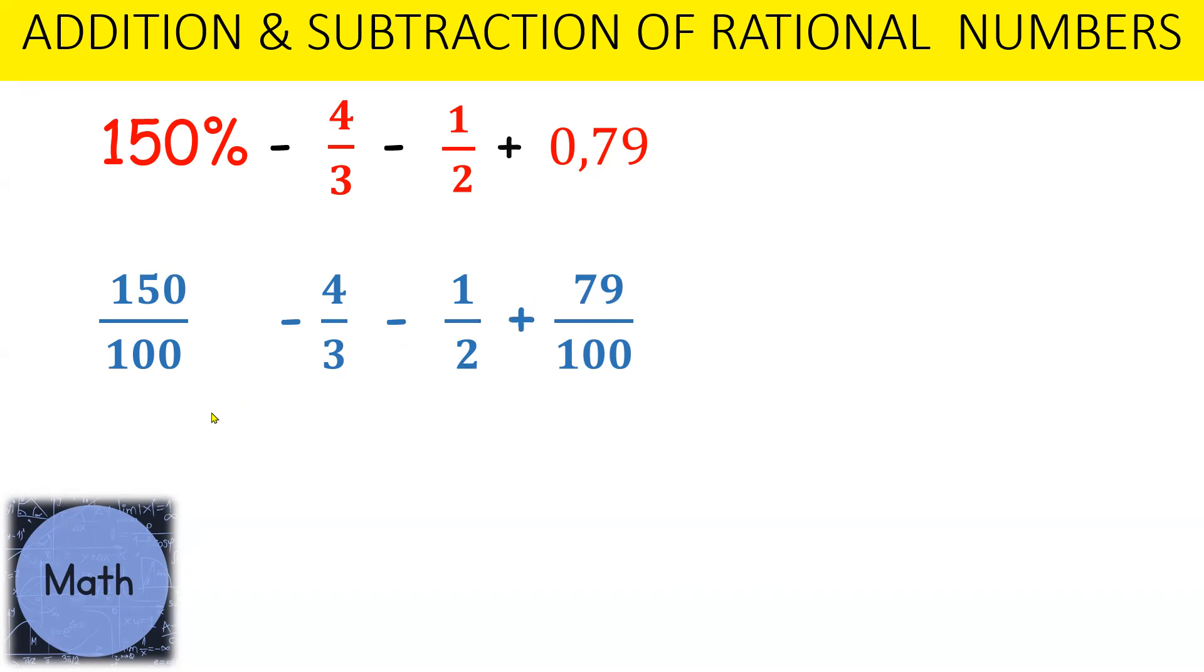Now what we need to do is try and get a common denominator for all these fractions, so that we can add and subtract these rational numbers. 3 cannot go into 100, you're going to end up with a decimal, so we're going to have to make this denominator much bigger, so that 100, 3, 2 can all go into the same value. The most obvious common denominator here is going to be 300.